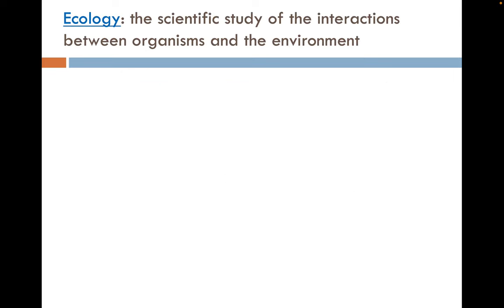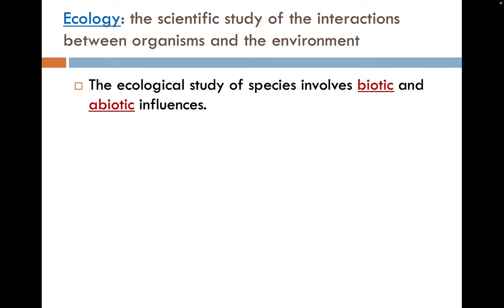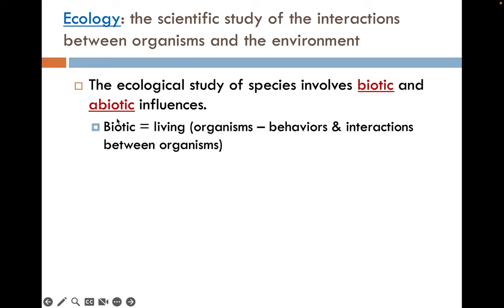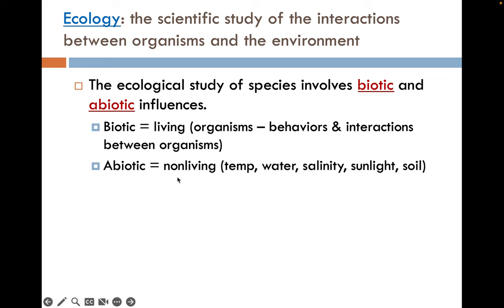Ecology is the scientific study of the interactions between organisms and the environment. The ecological study of species involves both biotic, or living, and abiotic, or non-living, influences. Biotic influences may be things like other organisms, their behaviors, or interactions between organisms. Abiotic non-living factors are things like temperature, water, salinity, sunlight, soil type, and so on.